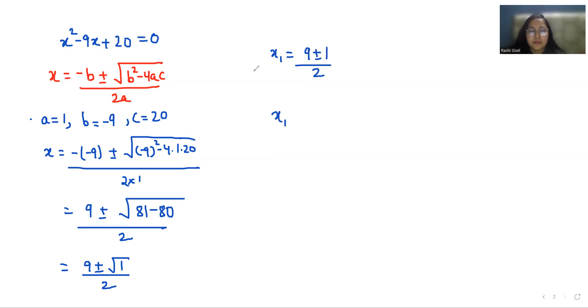So x1 is 9 plus 1 by 2, and x2 is 9 minus 1 by 2. So this gives us 10 by 2 which equals 5, and 8 by 2 which equals 4. These are the two values of x.